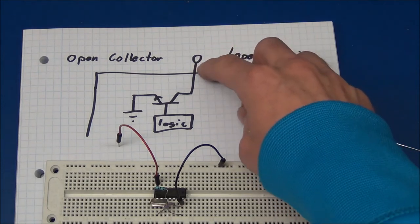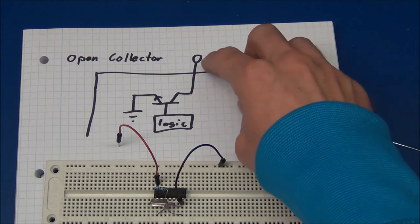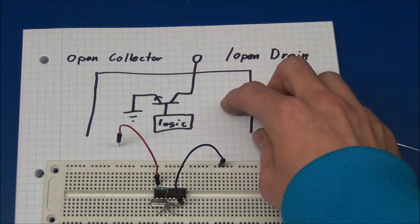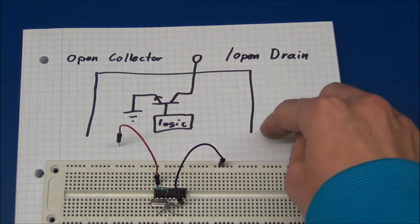But if you want to connect multiple outputs together for some reason, you will need one of these, because if you do it with the push-pull configuration, if one output is high and the other is low, it will just short out.